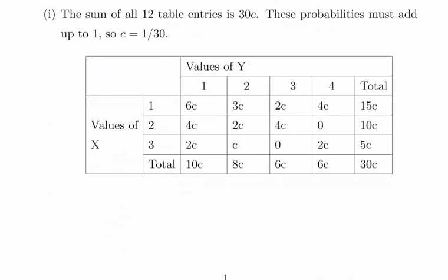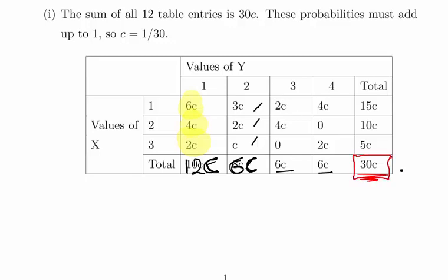So essentially what we do is we add up all the rows and all the columns. So 6c plus 4c plus 2c actually gives us 12c — there's a little typo there, that actually is 12c. Then 3c plus 2c plus c gives us 6c, and so on. So we get 6c here, 6c here. When we add that all up we get 30c. That necessarily is equal to 1, so therefore c is equal to 1 over 30.